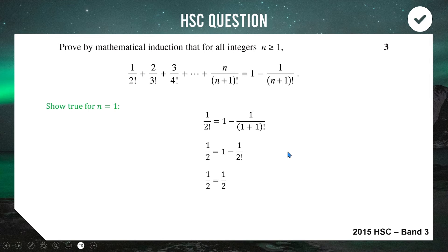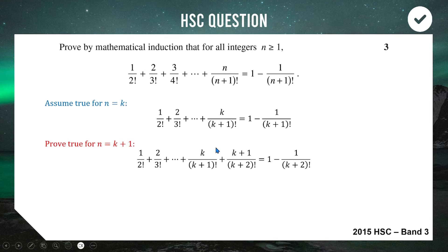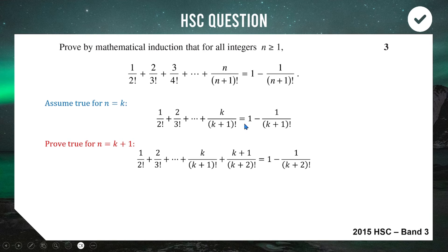Step two: set n equal to k and assume the statement holds true. Step three: change k's to k+1's. We add the next term (k+1)/((k+2)!) to the left-hand side, and the right-hand side target becomes 1 − 1/((k+2)!). Using the inductive hypothesis, everything up to k/((k+1)!) equals 1 − 1/((k+1)!), so we substitute that in.